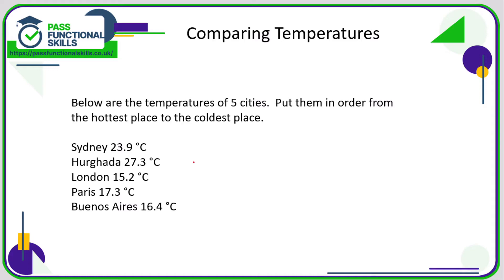The hottest is going to be the one with the largest number. The temperatures are 23, 27, 15, 17, and 16. So 27 is bigger than 23, which is bigger than 15, 17, and 16. In this question we might need to look at the value after the decimal point, but so far 27 is the largest.